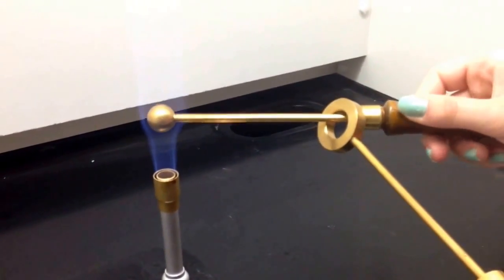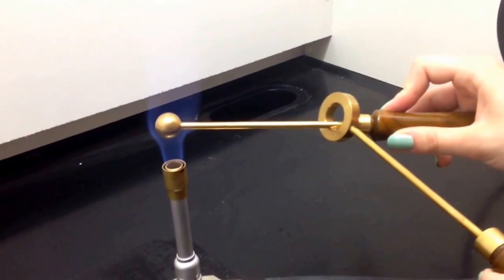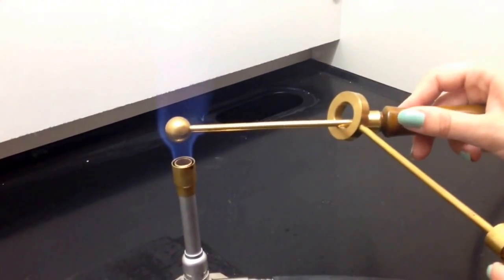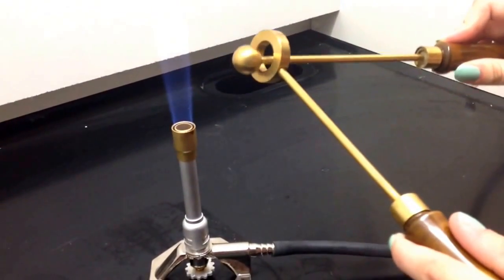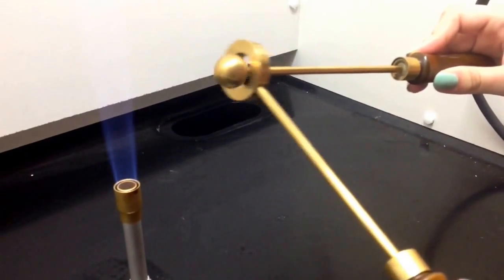Some metals actually expand more than others. Each metal is assigned a coefficient value for its thermal expansion capability. Now you can see the metal has expanded to the point where it no longer passes through the hole.